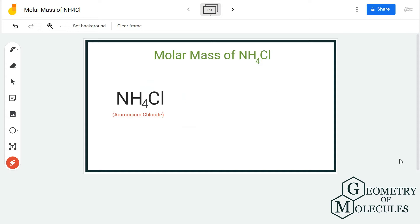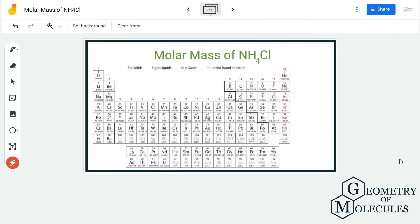So this is the chemical formula for NH4Cl, in which there are four atoms of hydrogen, one atom of nitrogen, and one atom of chlorine. So to find out the molar mass, we are going to look at the periodic table.